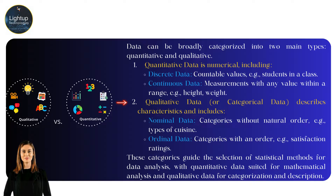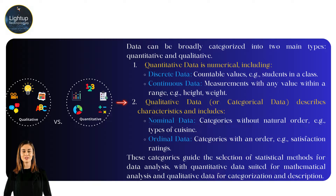Second, qualitative data, or categorical data, describes characteristics and includes nominal data — categories without natural order, example: types of cuisine — and ordinal data — categories with an order, example: satisfaction ratings. These categories guide the selection of statistical methods, with quantitative data suited for mathematical analysis and qualitative data for categorization and description.